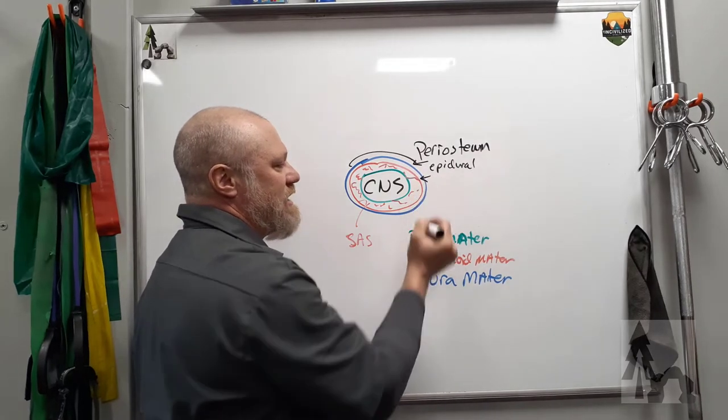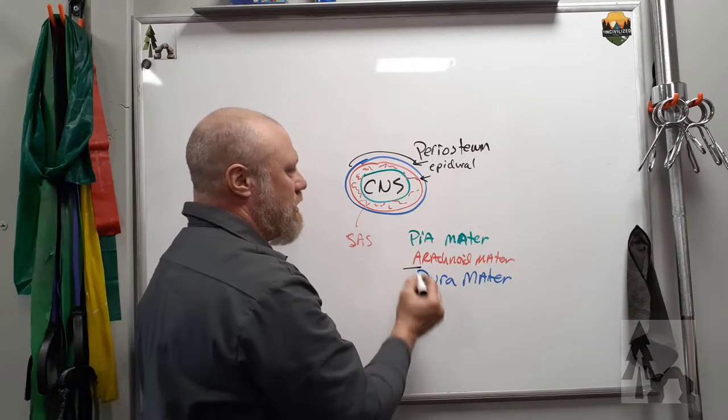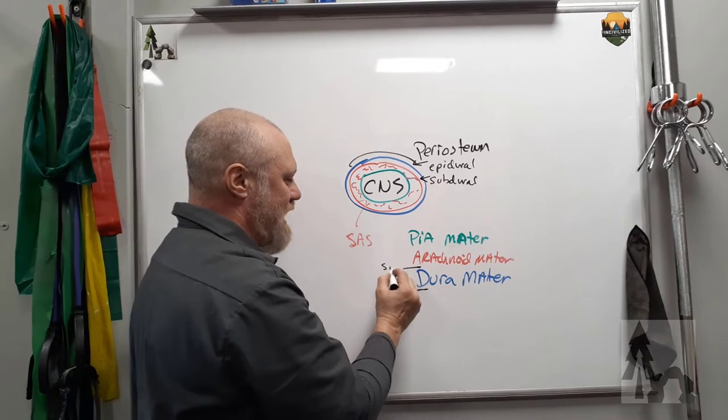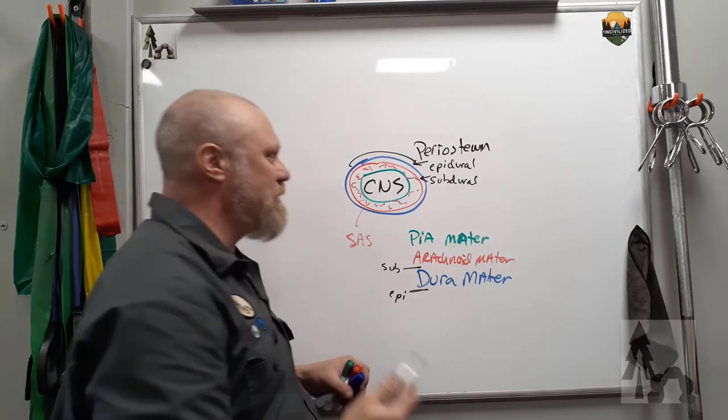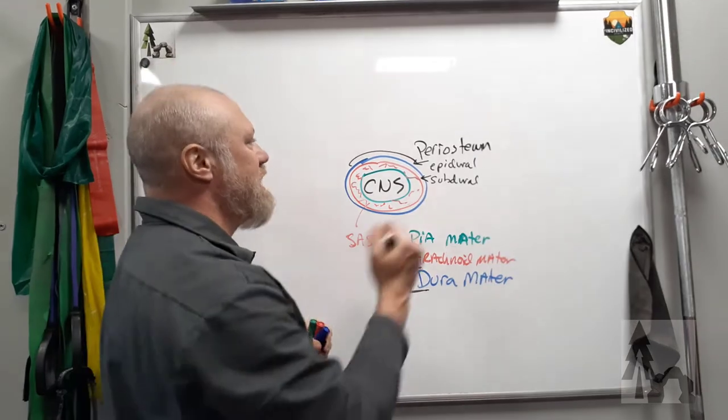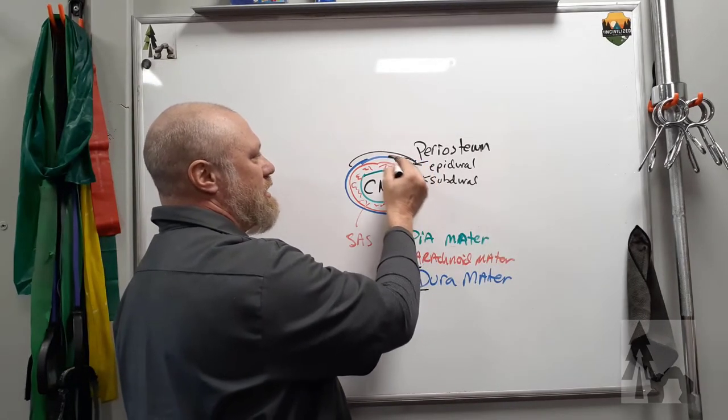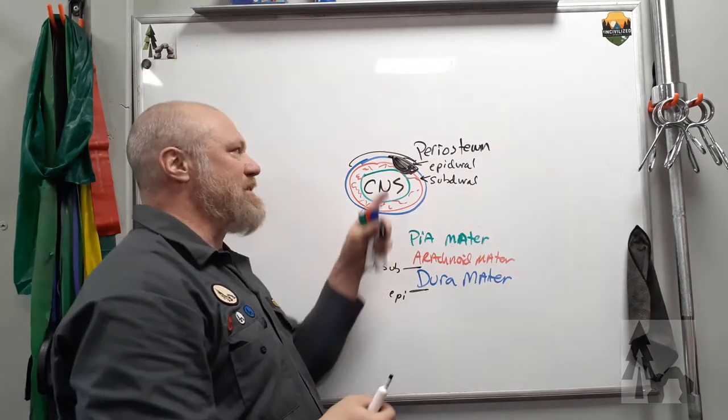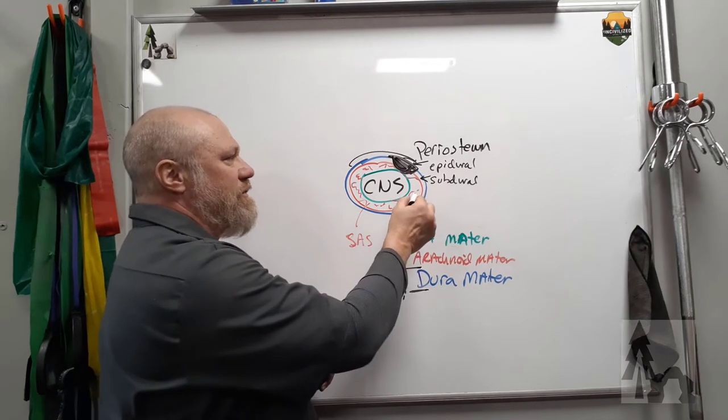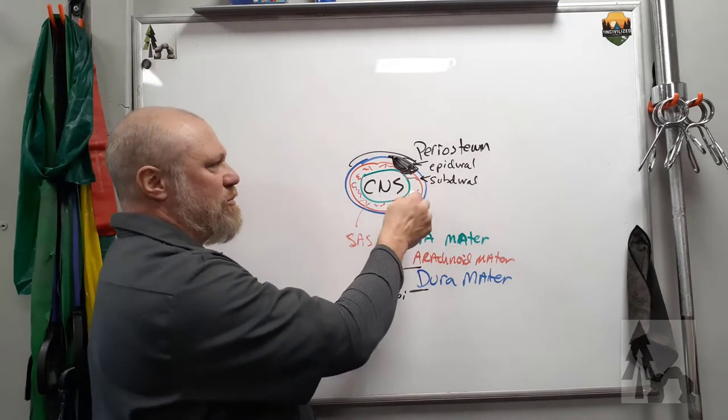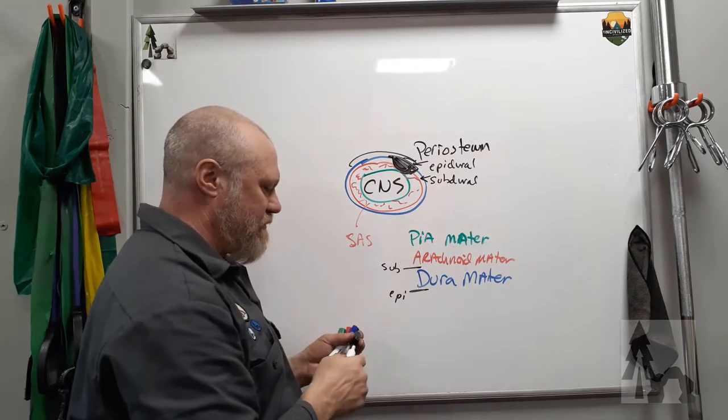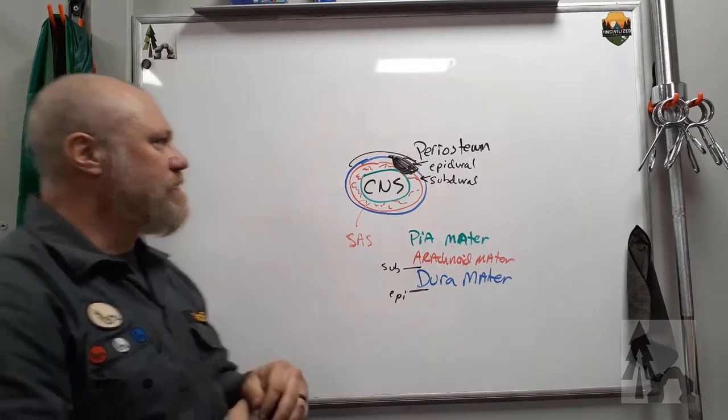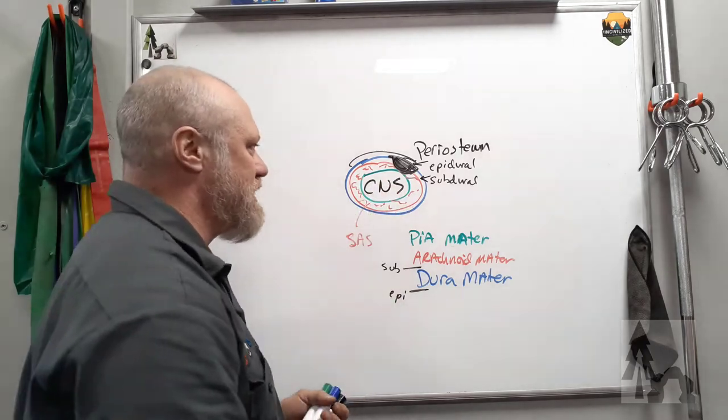And then between the dura and the arachnoid mater, you could get a subdural space. They're not there normally, but you could potentially have a subdural or an epidural hematoma. Let's say you tear a meningeal artery. It's going to bleed between the periosteum and the dura and press in into the epidural space. And then you could have a bleed of one of the veins or the superficial arteries of the brain and bleed into the subdural space and peel between the arachnoid and the dura mater. So those are just some potential issues with meninges.